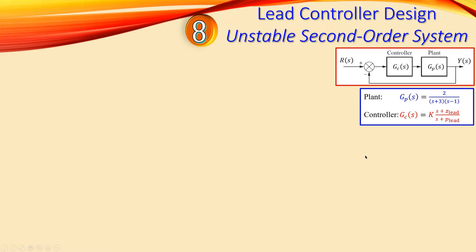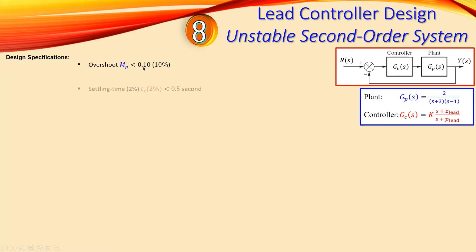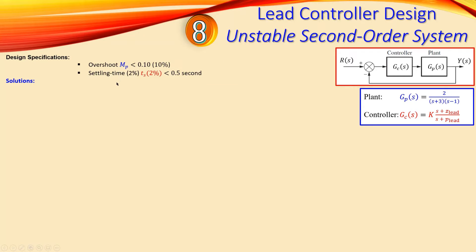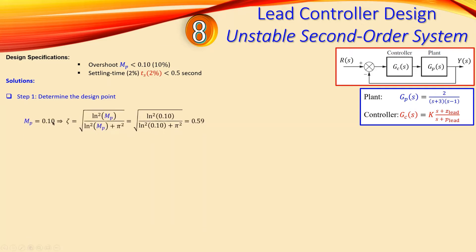The design specifications are: we need an overshoot of less than 10%, and a settling time with a 2% criterion of 0.5 seconds. These two will be used to determine the design point. We start the solution by computing the design point.